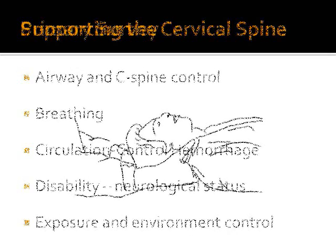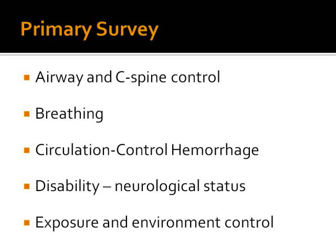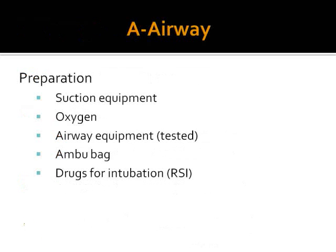A stands for Airway with cervical spine control. B stands for Breathing, that is assessment of ventilation. C stands for Circulation and hemorrhage control. D stands for Disability, in other words neurological status. E is important — expose the patient and ensure we do not expose them to hypothermia. For airway preparation, we must have ready: suction equipment, oxygen (given to all patients), airway equipment that should be tested, endotracheal tubes, oropharyngeal or nasopharyngeal airways, Ambu bag, and drugs in case we need to intubate.